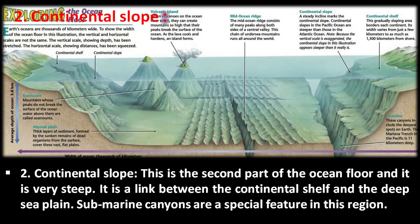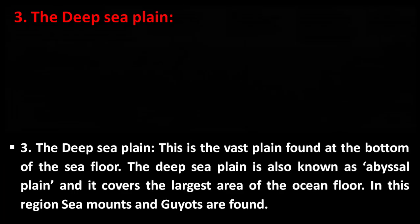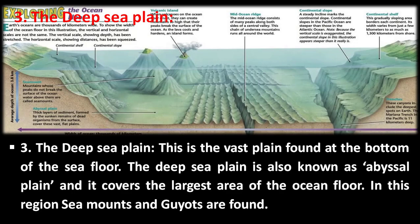The second part is the continental slope. This is the second part of the ocean floor and it is very steep. It is a link between the continental shelf and the deep sea plain. Submarine canyons are a special feature in this region.